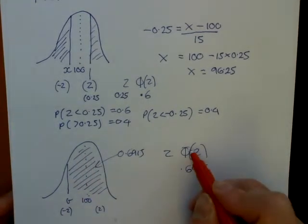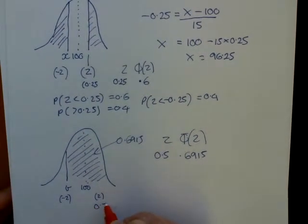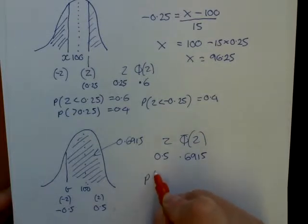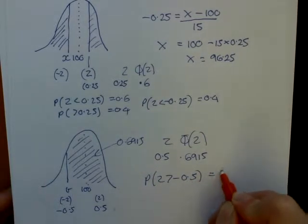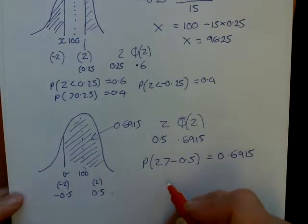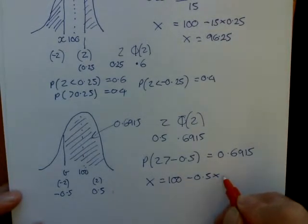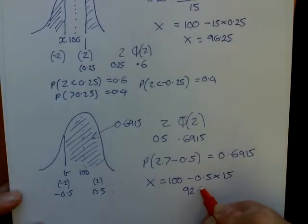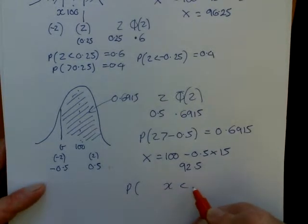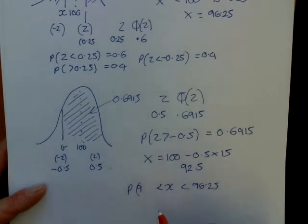So if you look up 0.6915 under all the z values, it comes to 0.5. So the z value we have is 0.5. So 0.5 above corresponds to what we want as the negative. So the probability of z is greater than minus 0.5 equals 0.6915. To convert this into x, x will equal 100 minus 0.5 times 15, which is 92.5. So the probability that we're between the two is between 96.25 and 92.5.